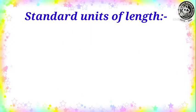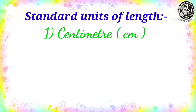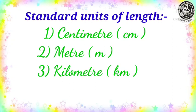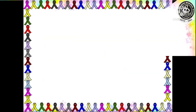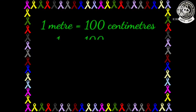Now let us read about the standard units of length. The first one is centimeter, represented as cm. The second one is meter, represented by small m. The third one is kilometer, represented by km. The base unit is meter, represented by small m. One meter is equal to 100 centimeters — and this can also be written in short form.